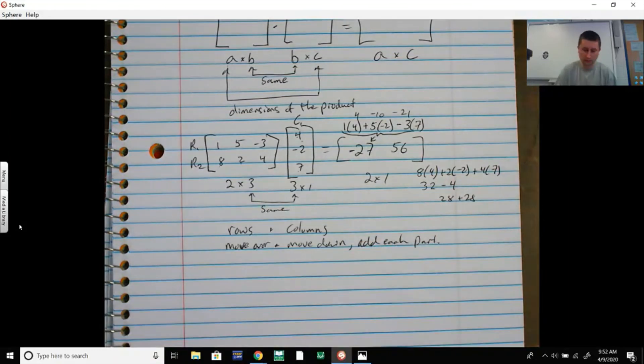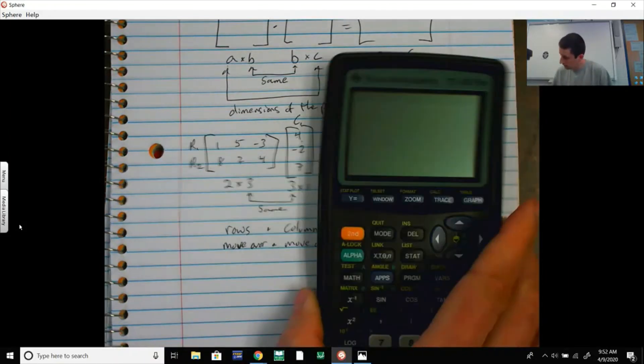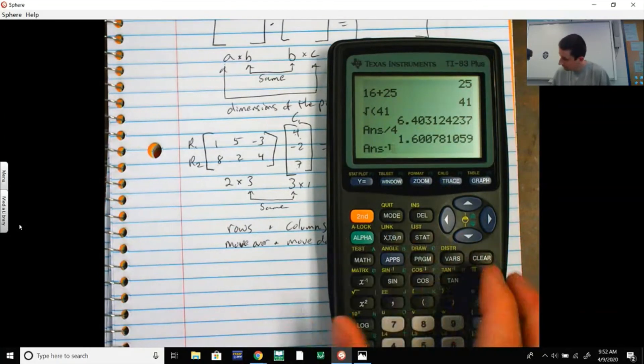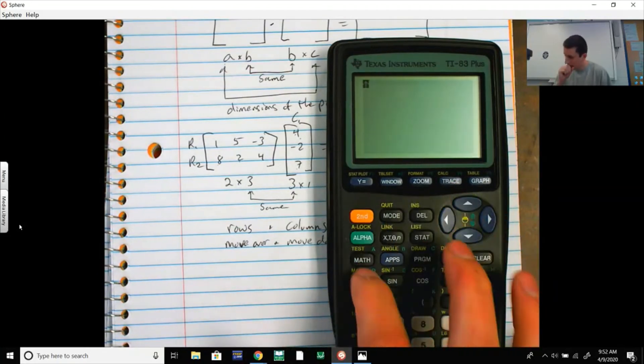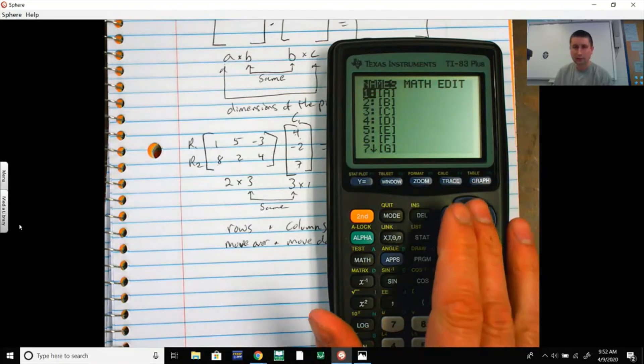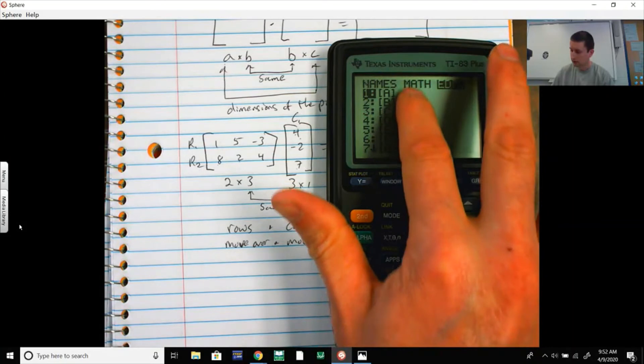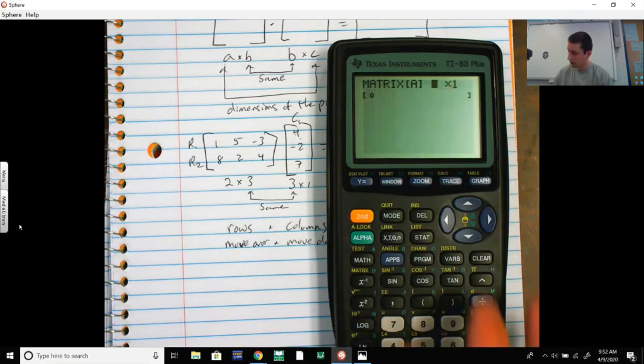You move over, you move down. Now on your calculators, you have a matrix menu right there. Second, go to Matrix. I'm going to edit these matrices. If you already have dimensions here, numbers, that's okay. Just go to Edit and you can change your dimensions here. I need a 2 by 3 matrix.